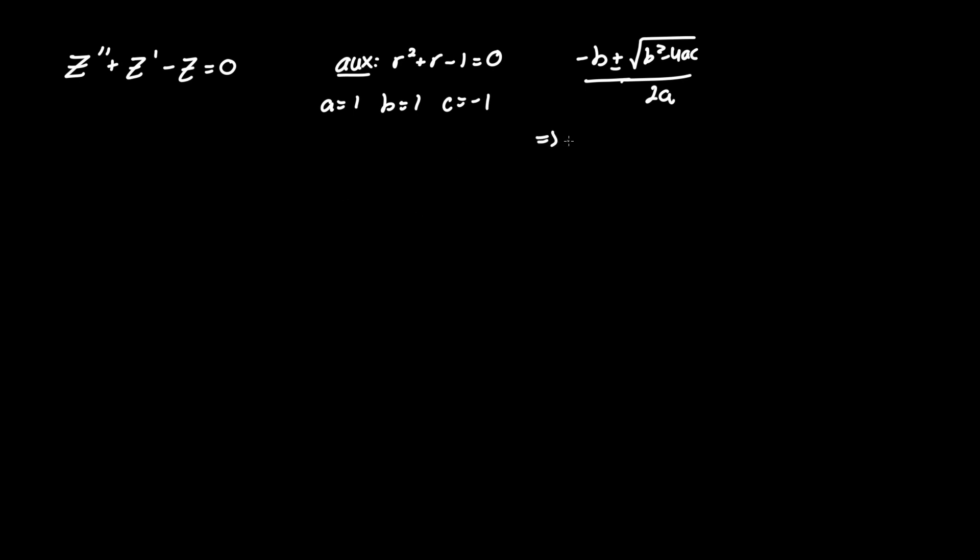Plugging that in we have negative one plus minus the square root of one squared which is one minus four times a which is one, c which is negative one, all over two times one.